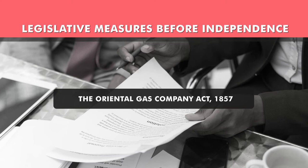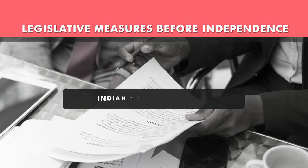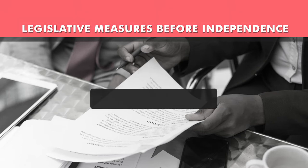It is not that after the constitution we only started thinking about the legal framework for conservation of nature. Even before that, during the British period, there were many legislative measures before independence which were basically used to protect nature. There are acts like the Oriental Gas Company Act 1857, the North Canal and Drainage Act 1873, the Indian Fisheries Act 1897, the Explosive Act 1908, the Poison Act 1919, the Indian Forest Act 1927, and the Motor Vehicle Act 1938.